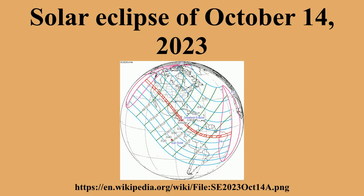Each member in a semester series of solar eclipses repeats approximately every 177 days and 4 hours at alternating nodes of the Moon's orbit. It is a part of Saros cycle 134, repeating every 18 years, 11 days, containing 71 events.